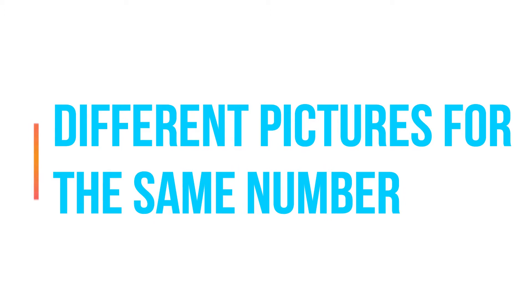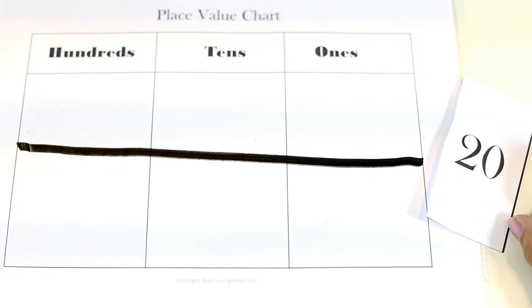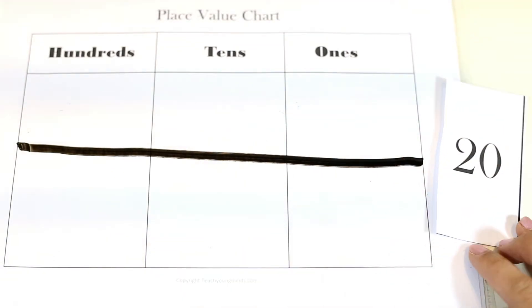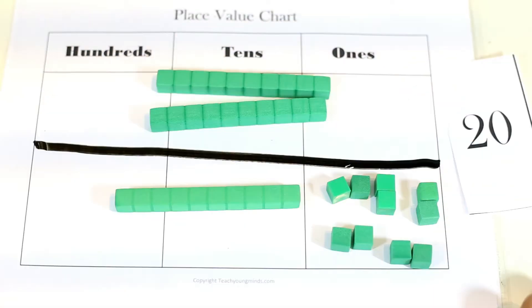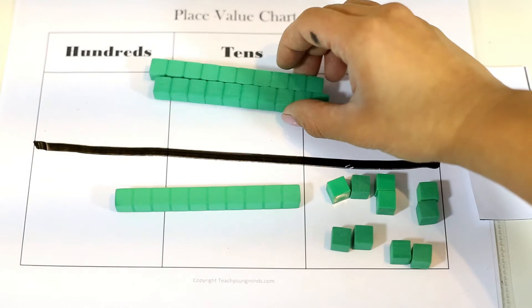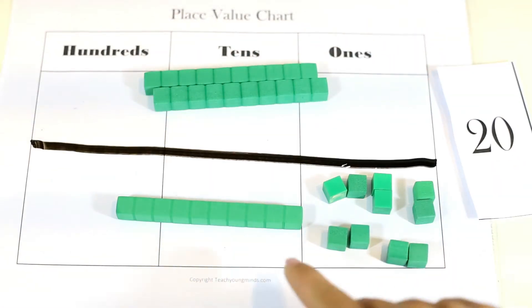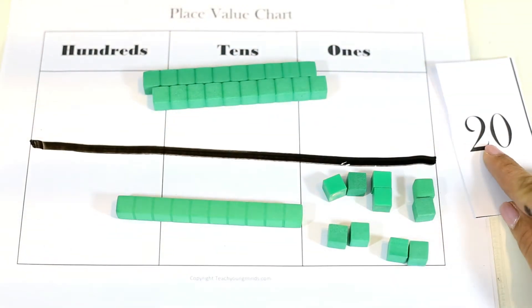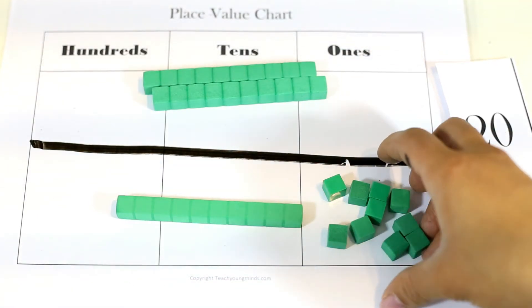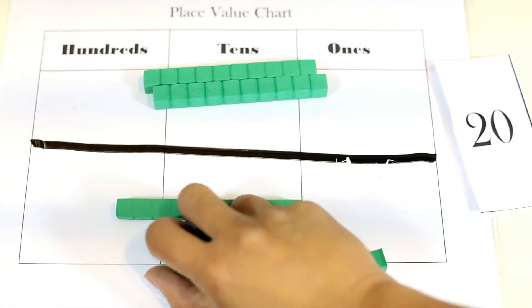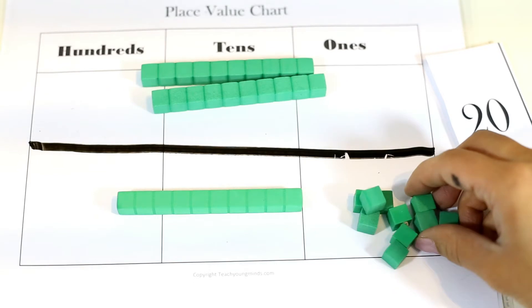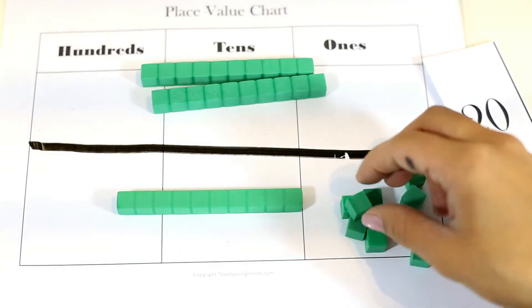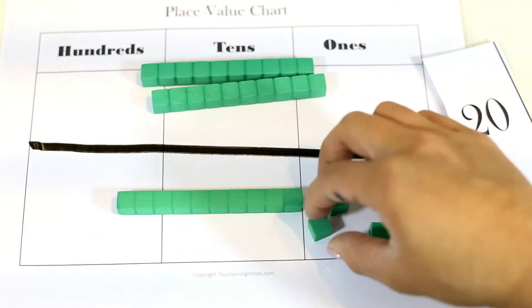For this next activity, the learner is to show a number, say, for example, the number 20, two different ways, at least two different ways, using place value blocks. So you can show the number 20 this way, two tens, or one ten and ten ones also show 20. Obviously, these would be regrouped into a ten, thereby showing two tens. But it's really good for the learner to understand that there's different ways to manipulate a number.